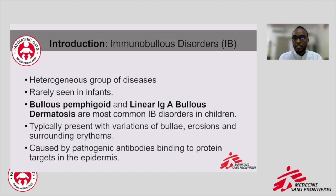I would like to give a short introduction about the disease. Immunobullous disorder is a heterogeneous group of diseases including several uncommon skin disorders rarely seen in infants. Bullous pemphigoid and linear IgA bullous dermatosis are the most common immunobullous disorders seen in children. The condition typically presents with variations of bulla, erosions, and surrounding erythema. These immunobullous skin diseases are caused by pathogenic antibodies binding to protein targets in the epidermis.